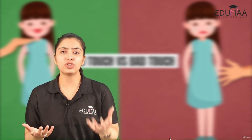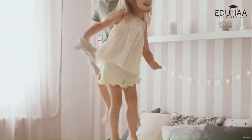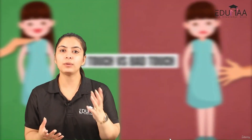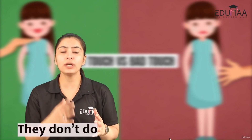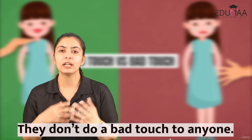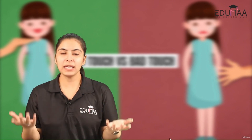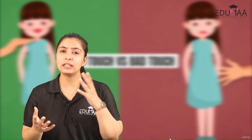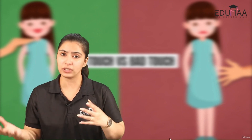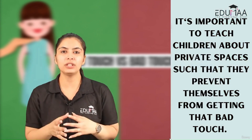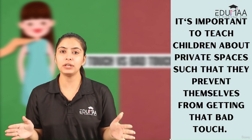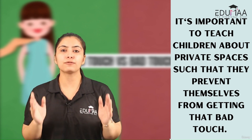It doesn't matter if your child is a girl or a boy — it's really important for both genders to be taught about child sexual abuse, good touch, and bad touch. When teaching your child, also keep in mind that in the future they should not do a bad touch to anyone either. Explain to them about different genders, how different genders have different private organs and private spaces where nobody should touch them, and how they should protect themselves from bad touch.